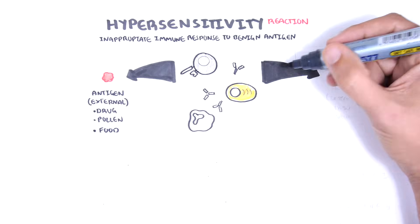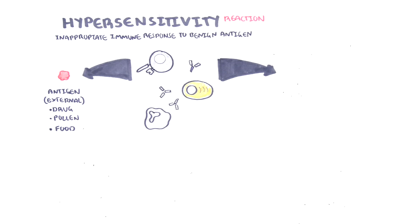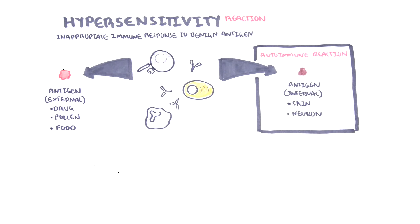However, an inappropriate immune response to an internal antigen, such as your own skin or neuron, would be called an autoimmune reaction. Hypersensitivity reactions can be the mechanism of diseases in some autoimmune reactions.